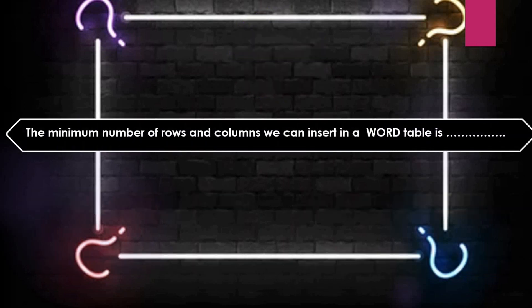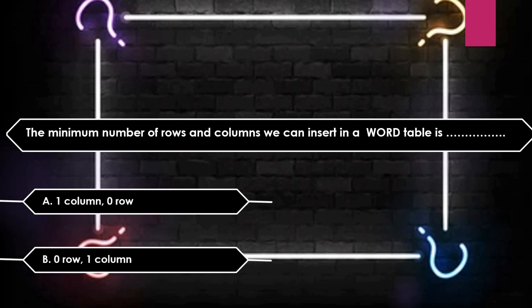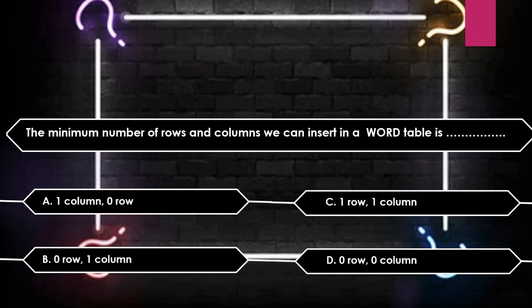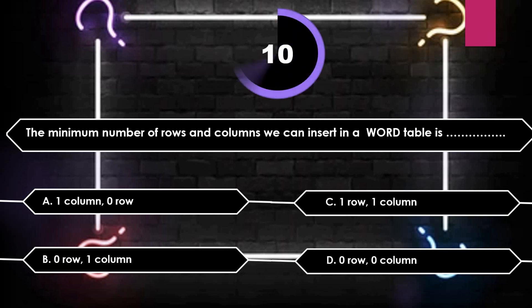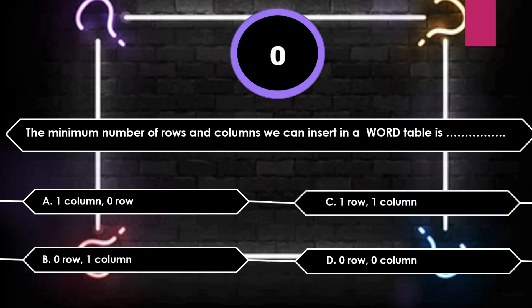The minimum number of rows and columns we can insert in a Word table is: one row zero column, zero row one column, one row one column, or zero row zero column. The minimum row and column in a Word document table insert — the answer is one row, one column.